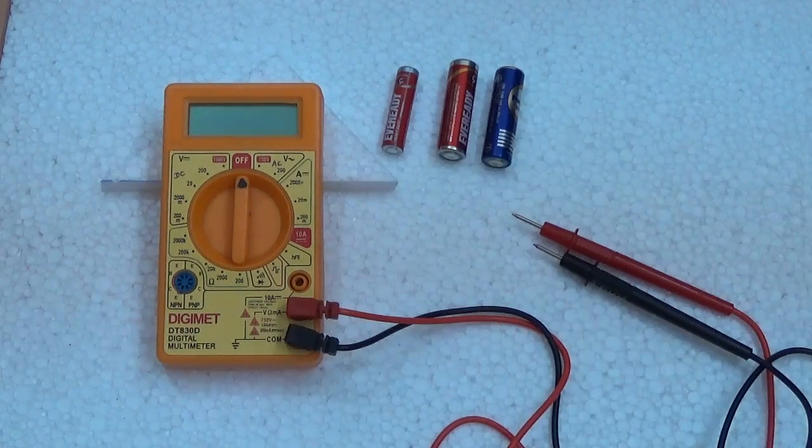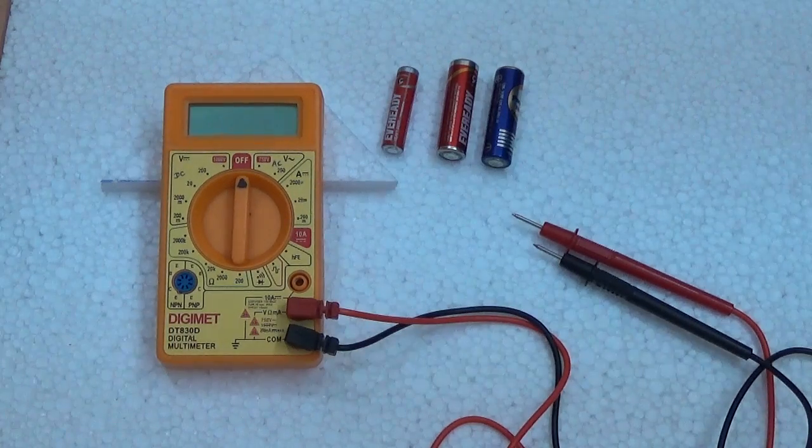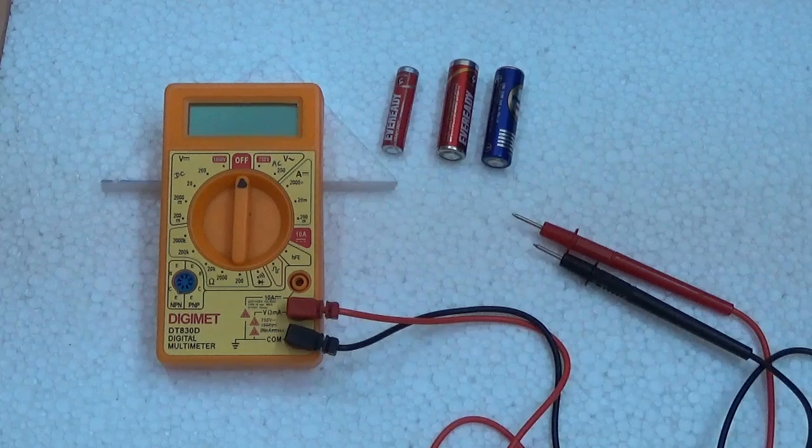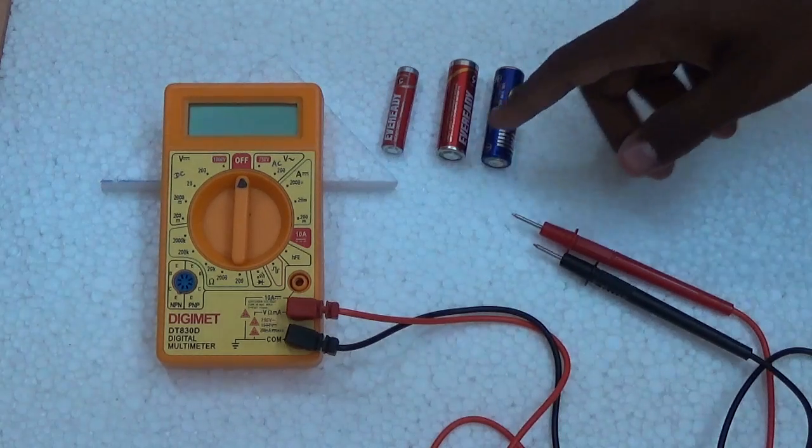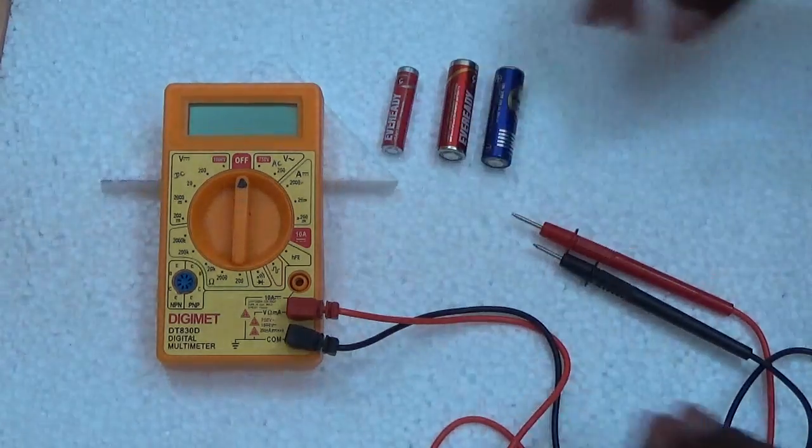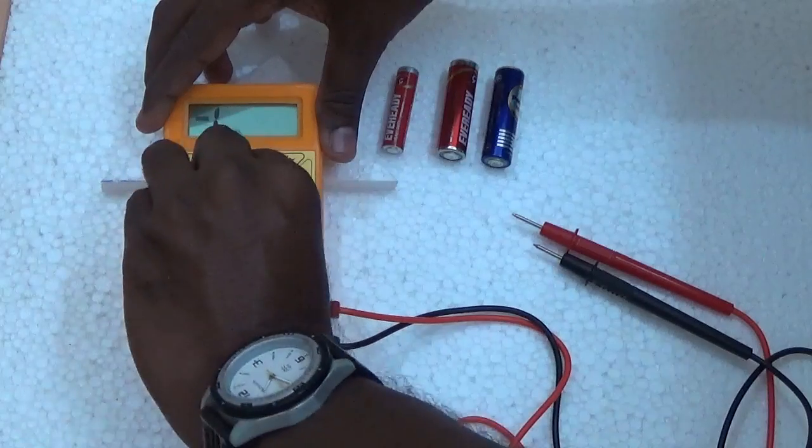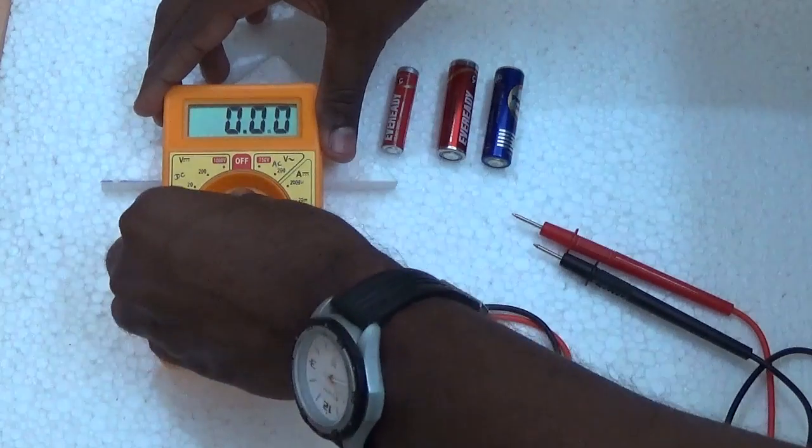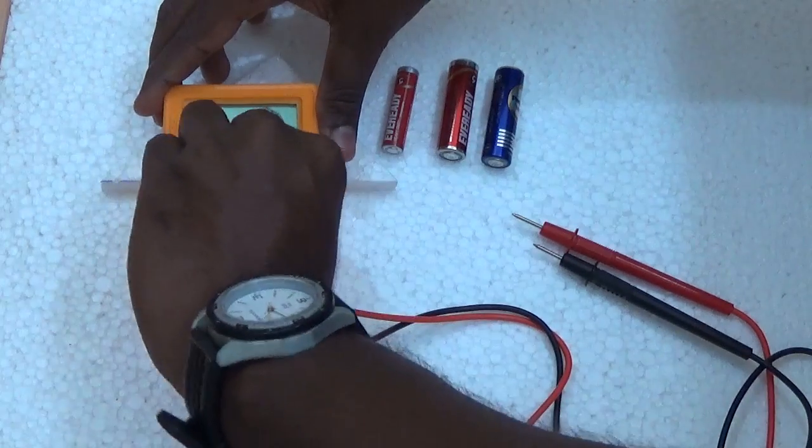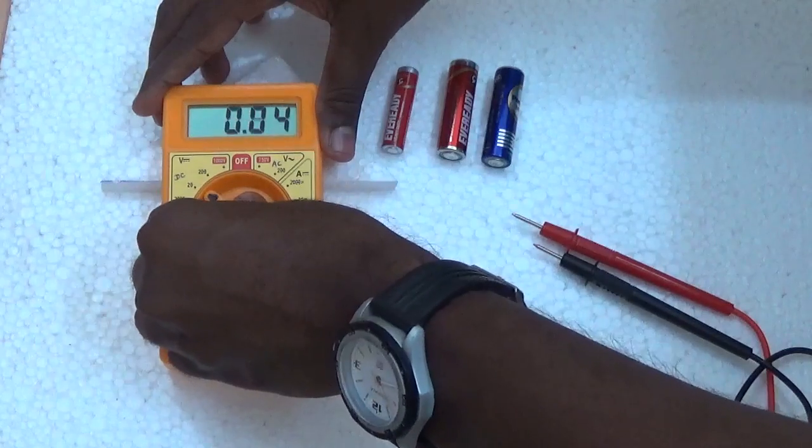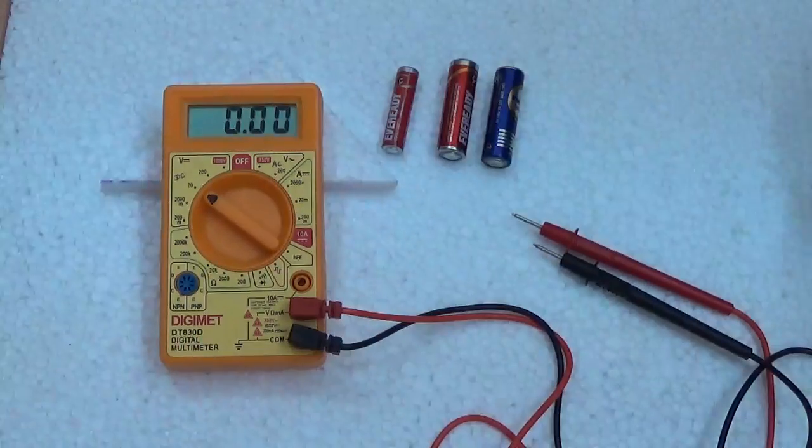Hi everybody, today I'm going to show how to test double A and triple A size batteries. First, you take the batteries and a digital multimeter. Now turn on the multimeter and set it to 20 volts in the DC volt range.